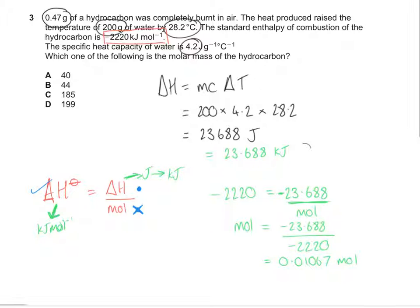And then we are told that our mass is 0.47, and so we can use our equation of n equals mass over RFM. If we rearrange that we get RFM is mass over n.